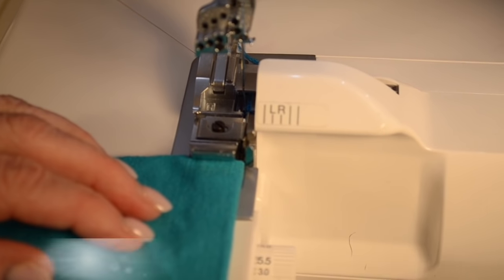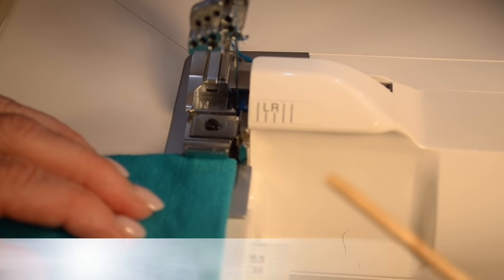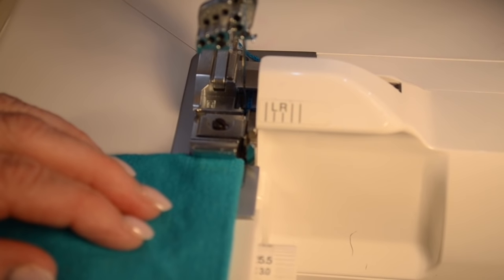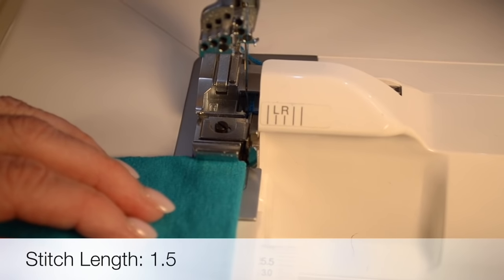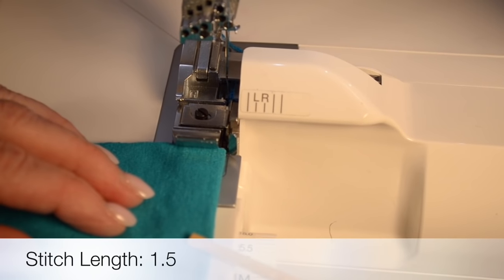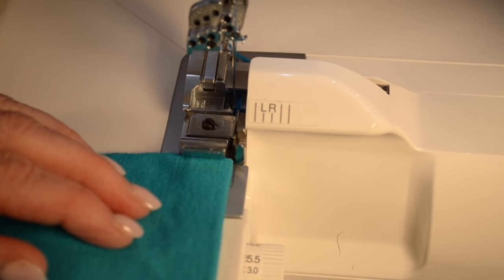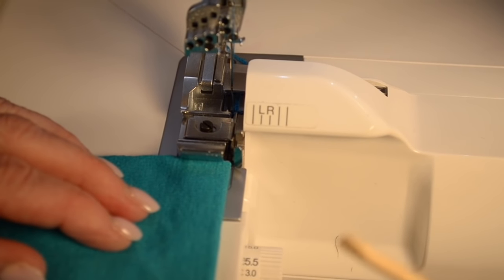I am set up for a three thread rolled hem. I've adjusted my stitch width to what M on this machine but you'll check your manual for your correct setups. I have my stitch length on 1.5 but depending on the look that you want and the fabric that you're using you may want to do some samples and test different stitch lengths just to see the one that you prefer.